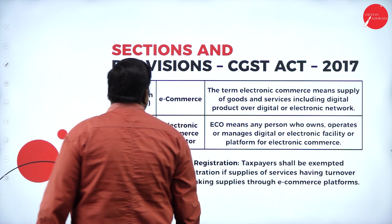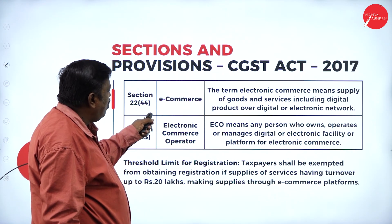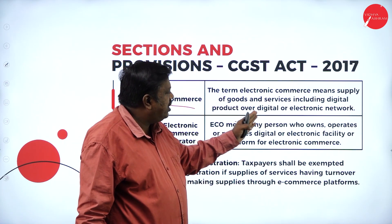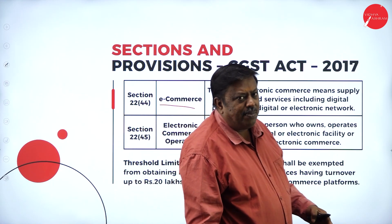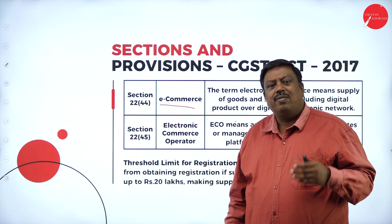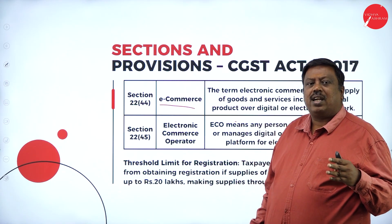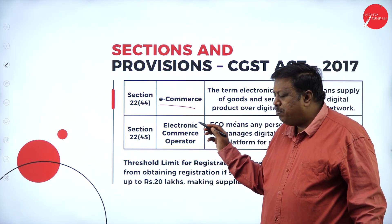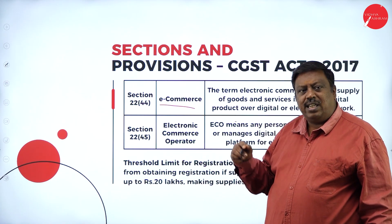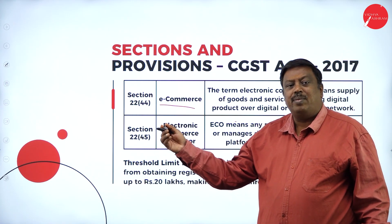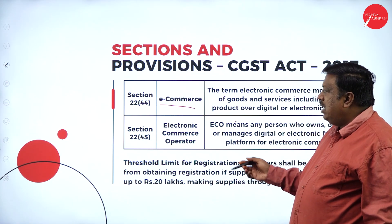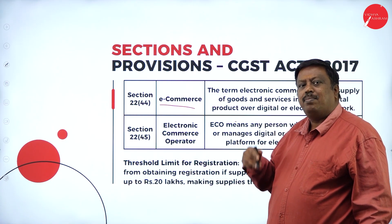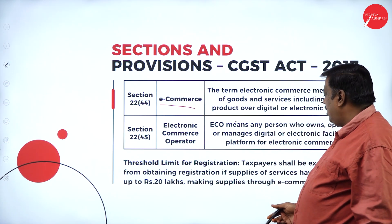Under Section 24, sub-clause 44, regarding e-commerce: the term electronic commerce means the supply of goods and services including digital products over a digital or electronic network. Every concept is now in the form of an e-GST system, where the workload of tax calculation has been reduced. The electronic system helps manufacturers, wholesalers, retailers, and all business people involved in goods and services to easily identify what tax they have collected and what amount they must pay to the government.